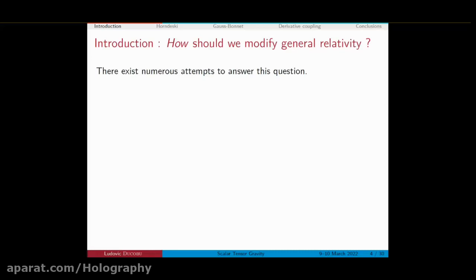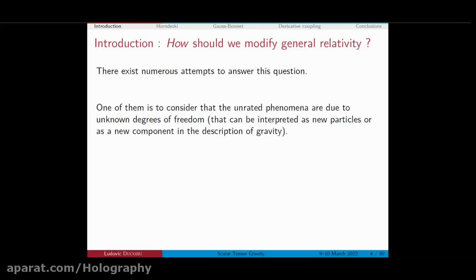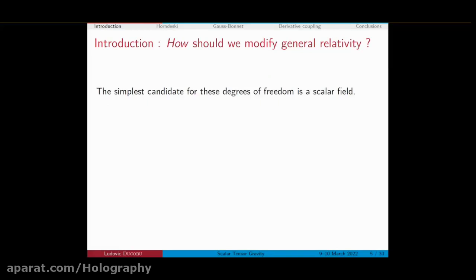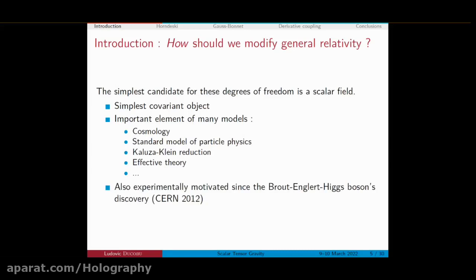The next question is how should we do this modification, and of course this is the tricky one — there is no definitive answer. One approach is to add new degrees of freedom to the theory. In general relativity, all degrees of freedom are encoded within the metric and its associated Levi-Civita connection. If you want to add new field content, the simplest candidate is definitely a scalar field, which is the simplest covariant object you can imagine and is already very present in modern theoretical physics.